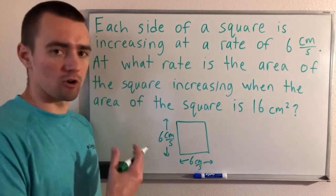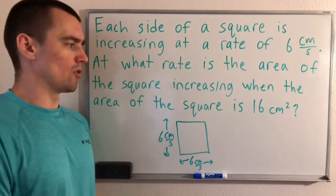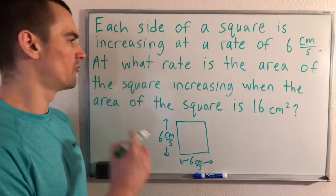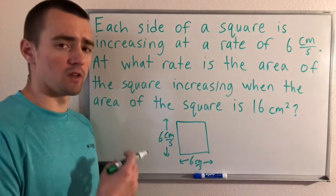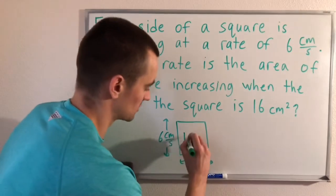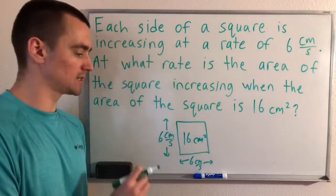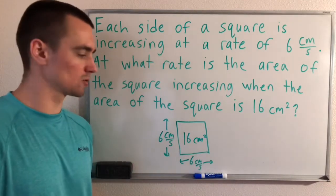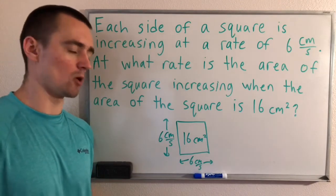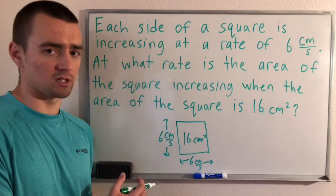As the square grows, it's still going to remain a square — the sides aren't going to grow at different rates. The only other piece of information we have is we want to figure out the rate that the area is increasing at the moment when the area is 16 centimeters squared. We know how quickly the side lengths are growing and we need to figure out how quickly the area is increasing.